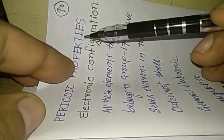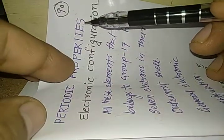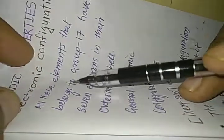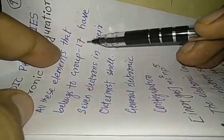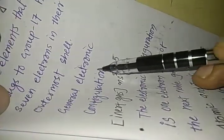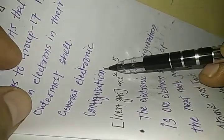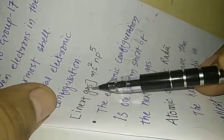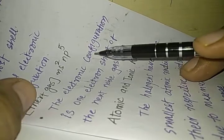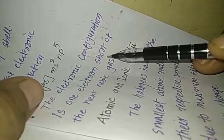Now periodic properties. We want to study the Group 17 elements. First, we should study the electronic configuration. All these elements that belong to Group 17 have seven electrons in their outermost shell. You can write the general electronic configuration as inert gas, then ns² np⁵. The electronic configuration is one electron short of the next noble gas.